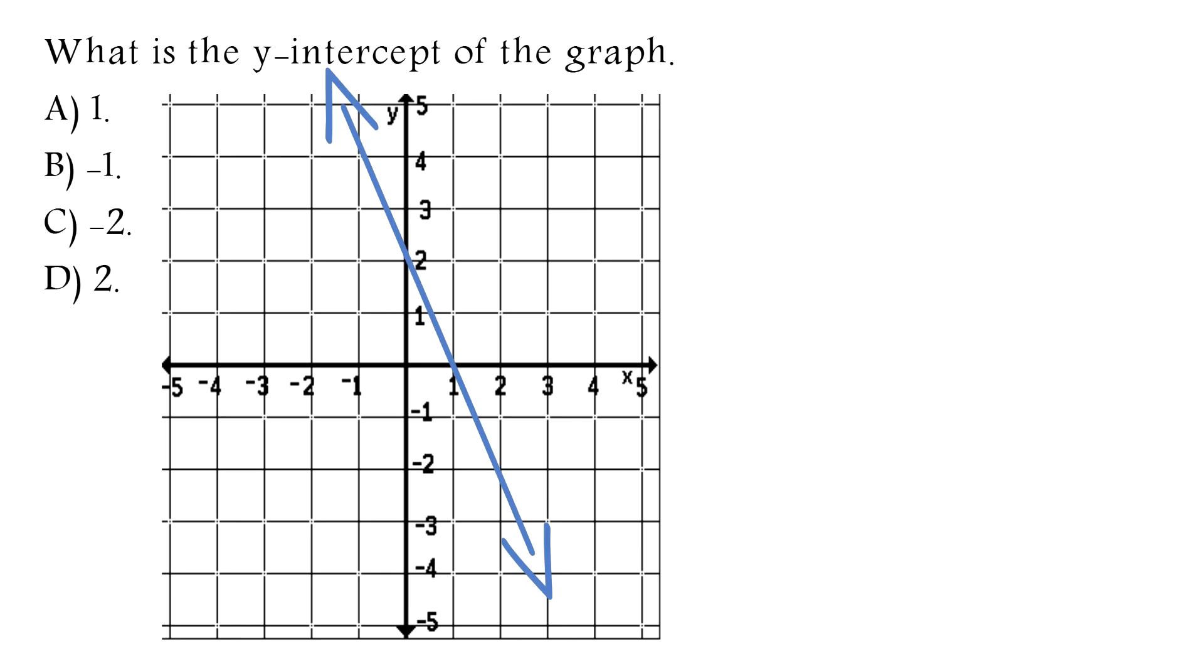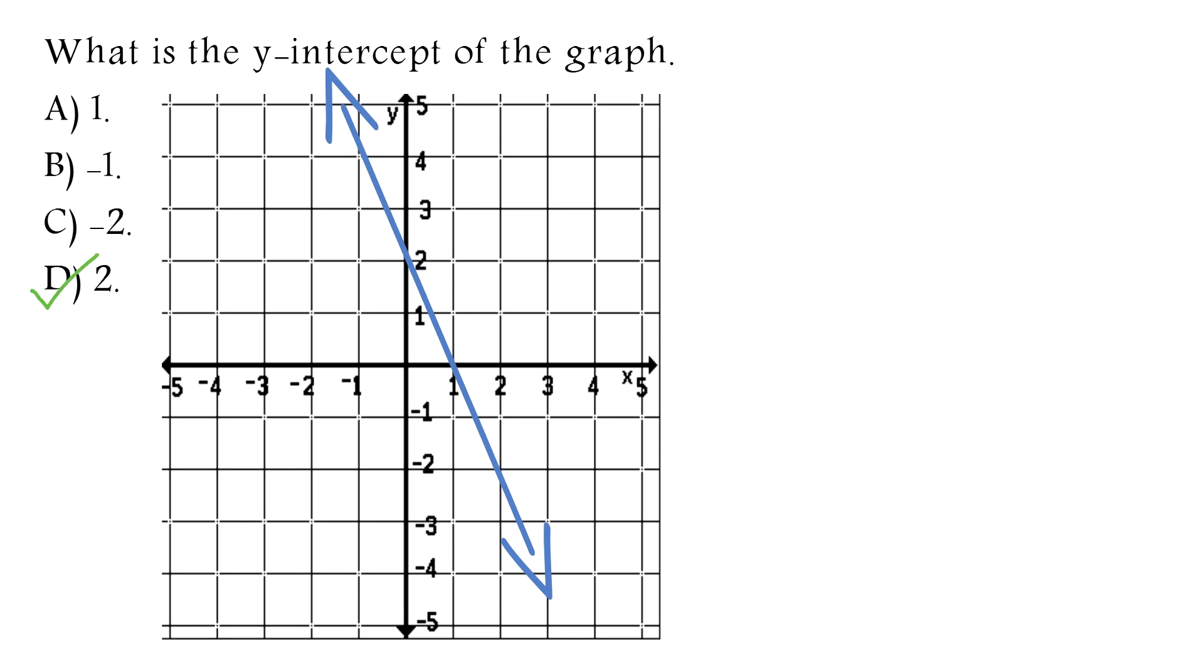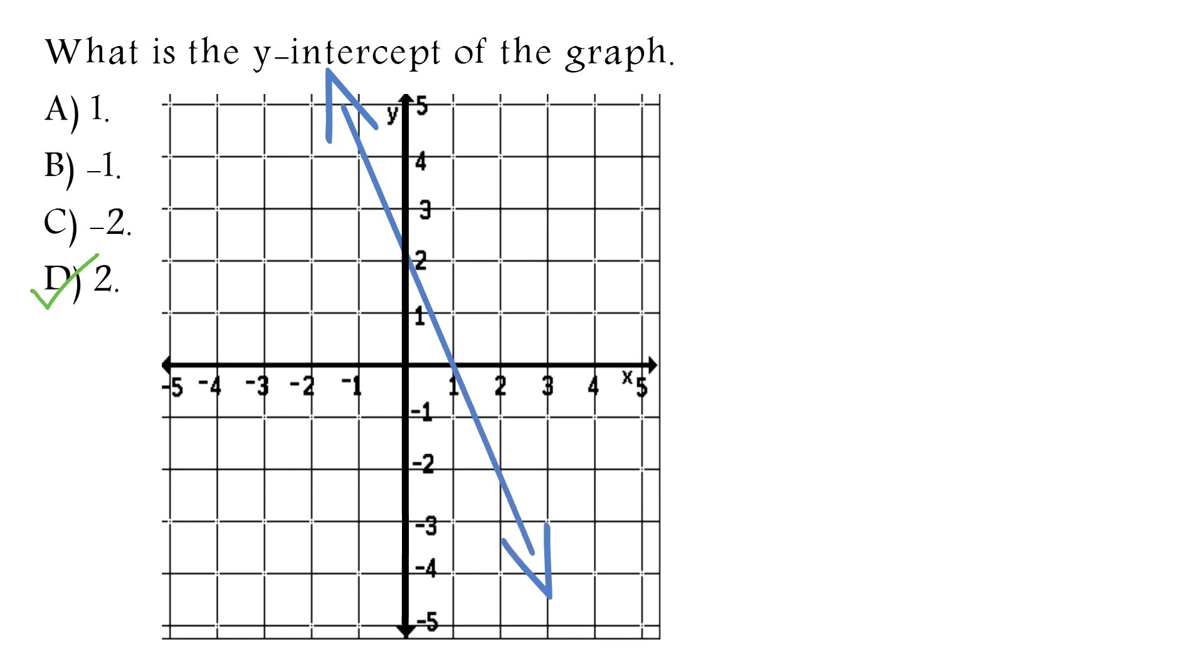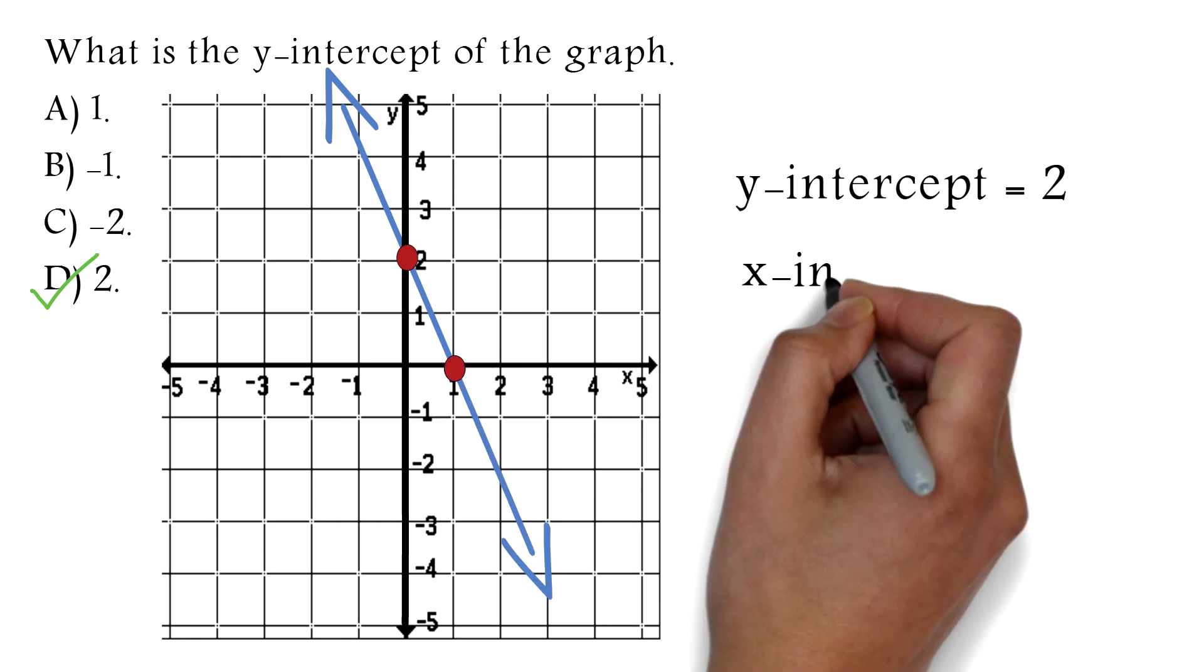What is the Y-intercept of the graph? A. 1, B. Negative 1, C. Negative 2, D. 2. The correct answer is D, 2. The Y-intercept is the point where the line meets the Y-axis. This is our Y-axis. The line meets the Y-axis at this point. The value here is 2, therefore the Y-intercept is 2. You could have been asked to find the X-intercept. This is simply the point the line meets the X-axis. So this will be that point. Therefore the X-intercept is 1.